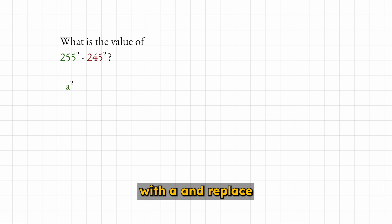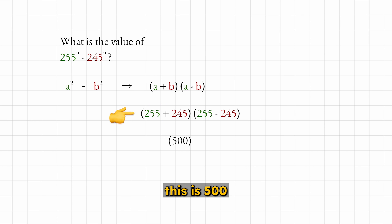You can replace 255 with A and replace 245 with B. So the problem is A² minus B², which is the difference of squares and simplifies to (A+B) times (A-B), which you can do in your head. This is 500, and this is 10, and the answer is 5000.